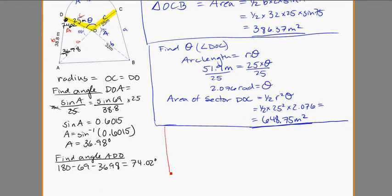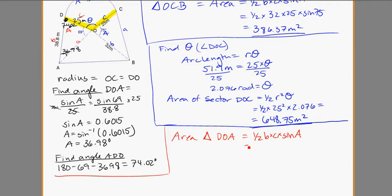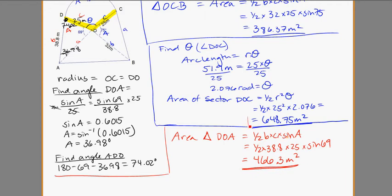Area of triangle DOA = ½×B×C×sinA. That's ½×38.8×25×sin69°. The area in this case calculates out to be 466.3 meters squared. So we are finding good information — we've got three of the four areas done.